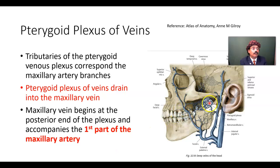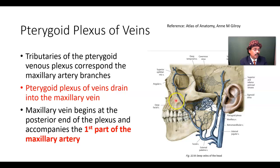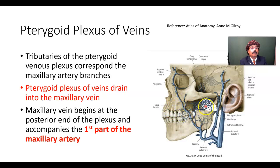So, this is the pterygoid plexus of veins. It drains venous blood from the entire region, including the orbit, nasal cavity, paranasal sinuses, all the teeth, and the roof and lateral wall of the oral cavity. This is the venous blood drained by the pterygoid plexus of veins.